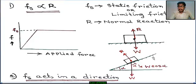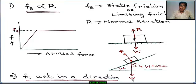This is an inclined rough plane with inclination angle alpha to the horizontal, and a block is placed on it. R is the normal reaction, perpendicular to the inclined plane. W is the weight of the block, always acting downward. In this case, R equals W cos alpha.